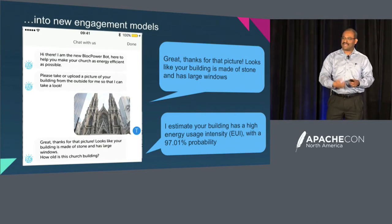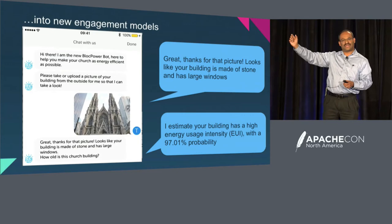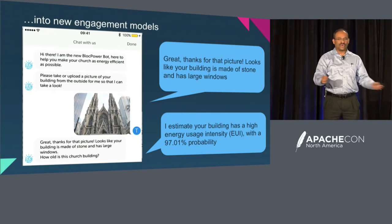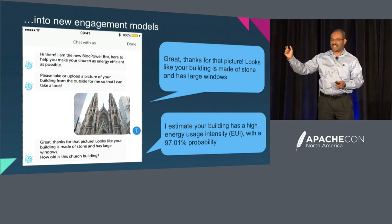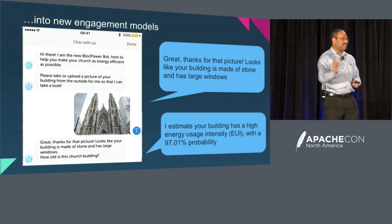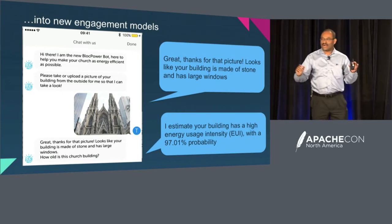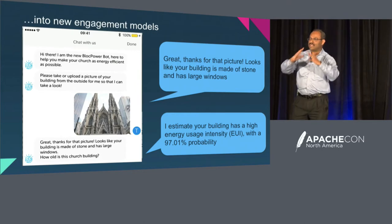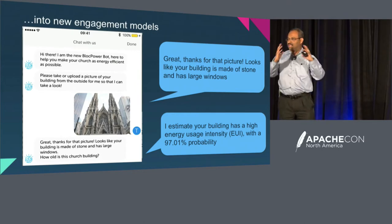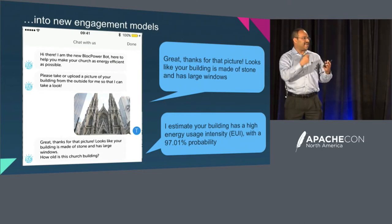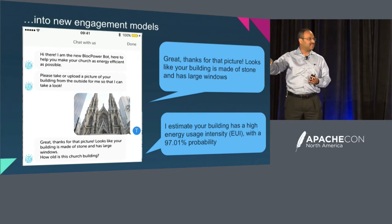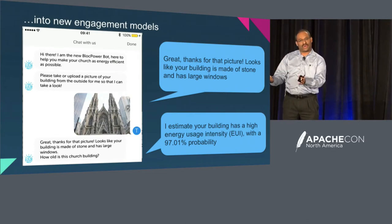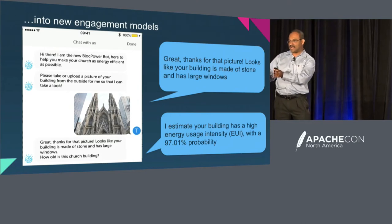The app tells them to go outside and take a picture of the building from outside, then go down to the basement and take a picture of the boiler, take a picture of the heating system, take a picture of the cooling system. All of this information is uploaded into the environment, pieces of information are extracted from those images, fed into a machine learning model, and it comes back with a score of how efficient the building is.